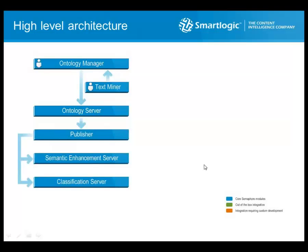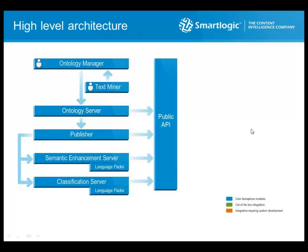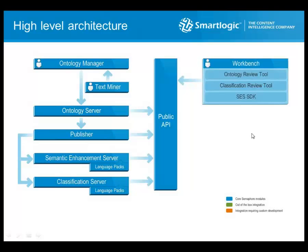Language packs encapsulating tokenization, lemmatization, and part-of-speech tagging for specific languages are deployed on both the semantic enhancement server and the classification server. All server-side components of Semaphore have public APIs, and we use those APIs in the Semaphore Workbench — a suite of web-based applications aimed at the subject matter expert audience. The classification review tool is essential in monitoring the accuracy and quality of classification, and the ontology review tool allows SMEs to review ontologies visually, make suggestions, and provide feedback.